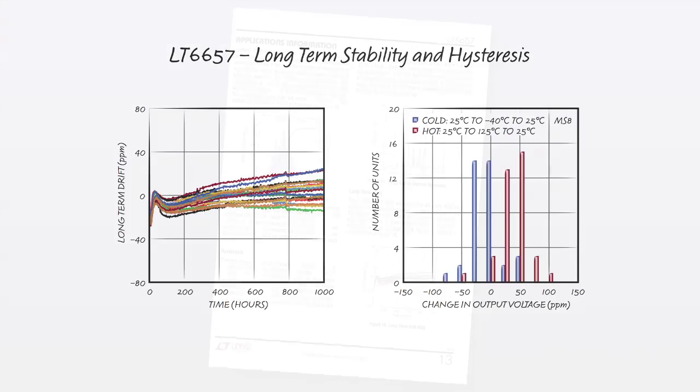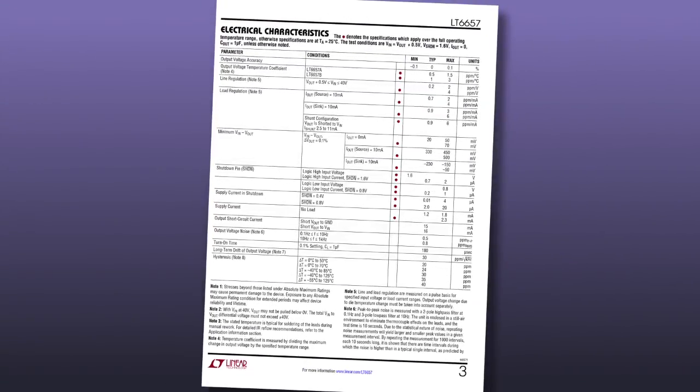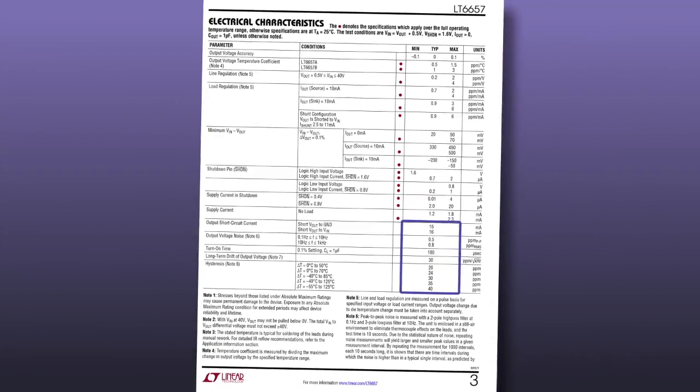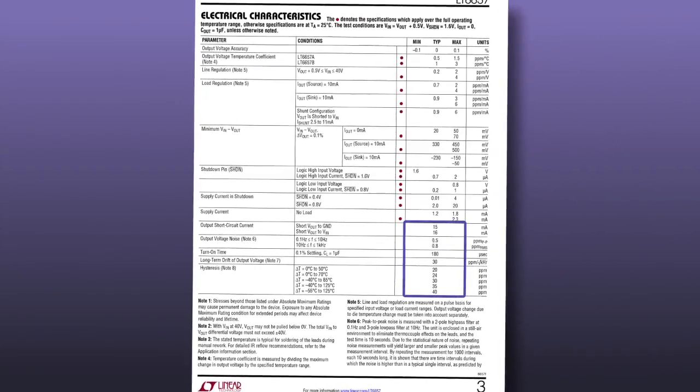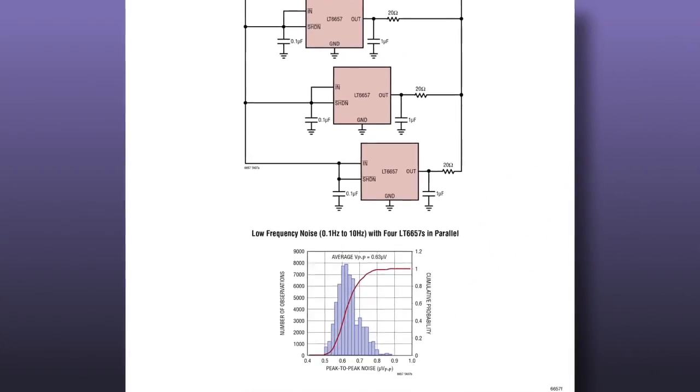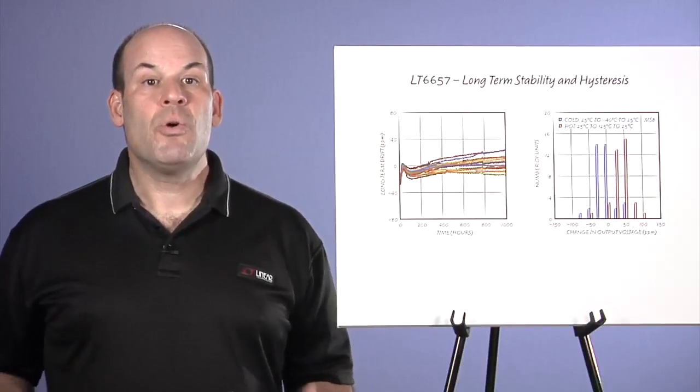Note that the distribution data is available in the data sheet. While typical values in the electrical table can be helpful guidance, it is never clear if these represent a mean, a deviation, or single unit. Linear Technology provides substantial data to give meaningful guidance when designing with voltage references. For even more data, contact Linear Technology sales department.